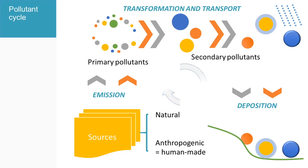The length of this cycle can be represented by the residence time or atmospheric lifetime for a given pollutant, which tells us how long a chemical species has spent on average in the air.